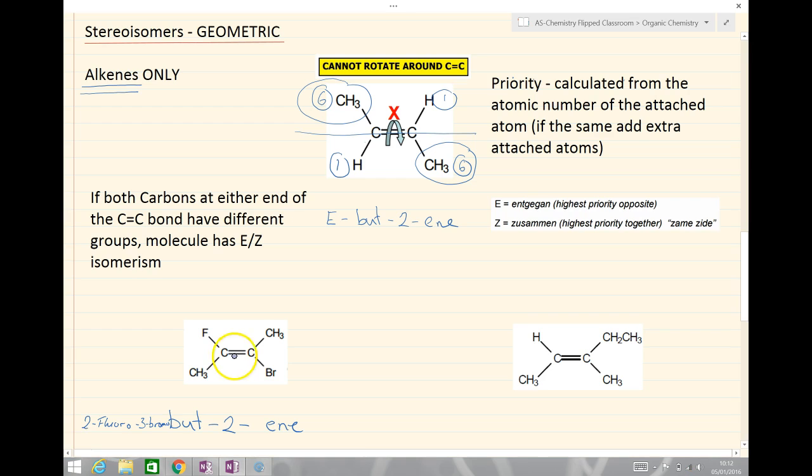So, the question is, have we got E, Z isomerism? And also, if we do, is it E or Z? So, the first thing to do, to split either side of that carbon-carbon double bond, look at the left-hand side, and we have different atoms attached to the carbon on the left.